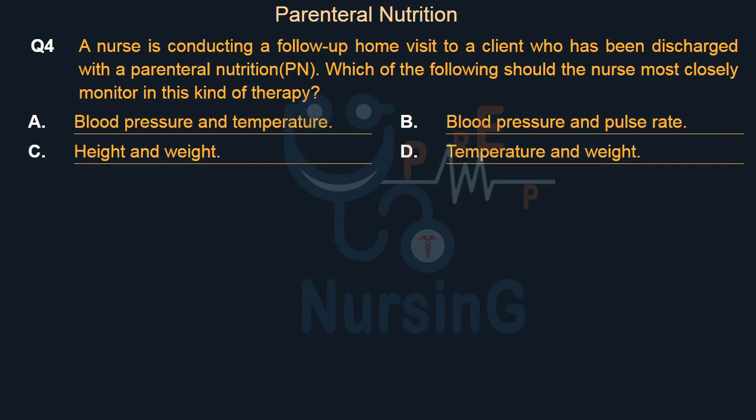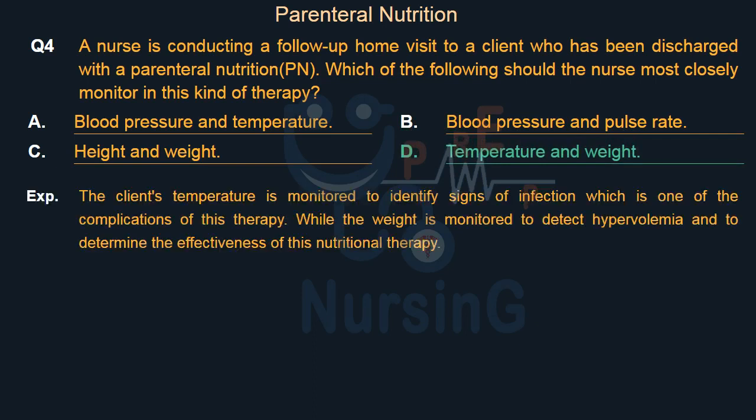Right answer is Option D: Temperature and weight. The client's temperature is monitored to identify signs of infection, which is one of the complications of this therapy, while weight is monitored to detect hypovolemia and to determine the effectiveness of this nutritional therapy.